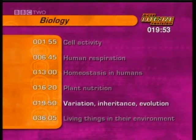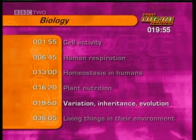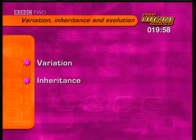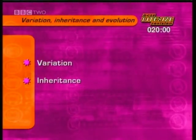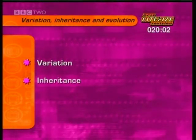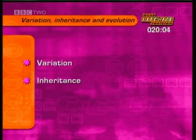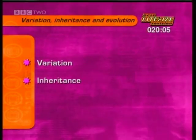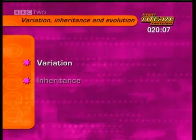This is the higher tier section on variation, inheritance and evolution. For the higher tier, you need to know a bit more about variation and inheritance in plants and animals. First, variation.